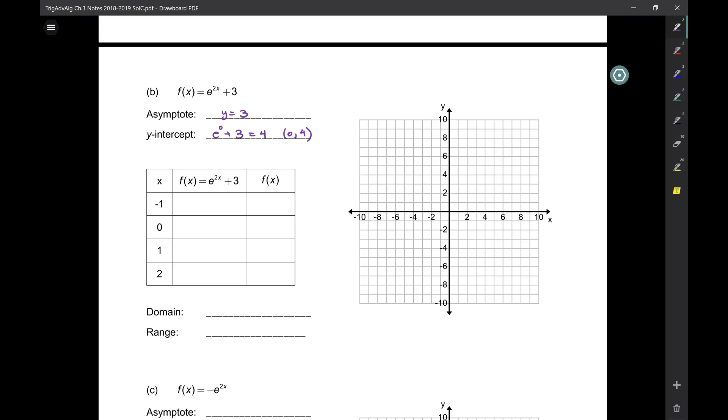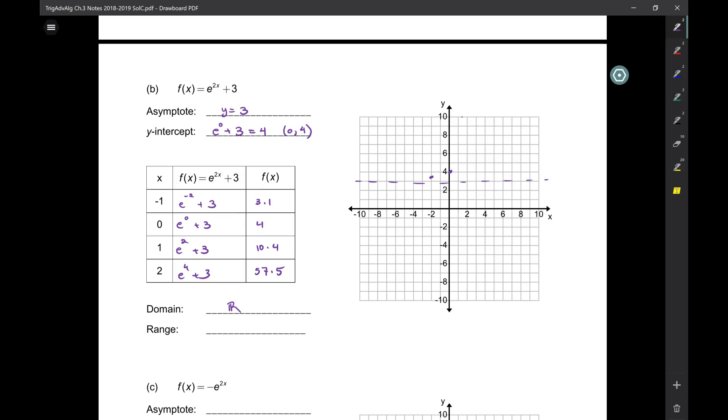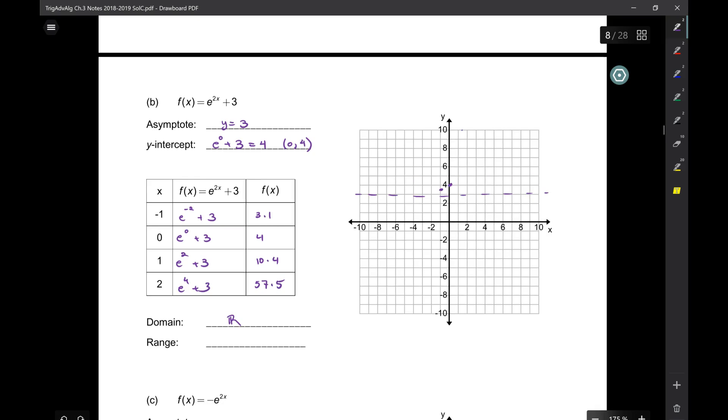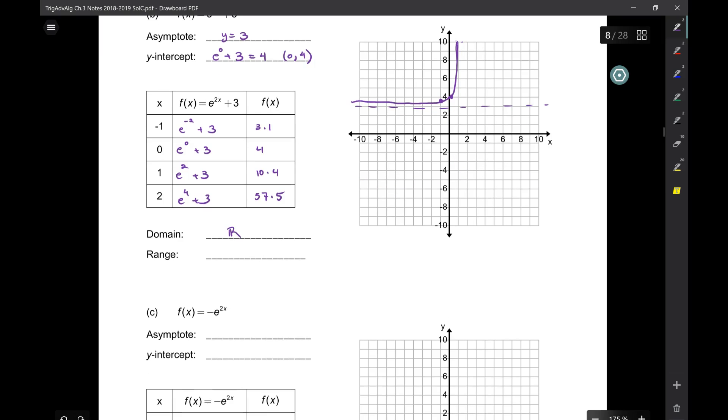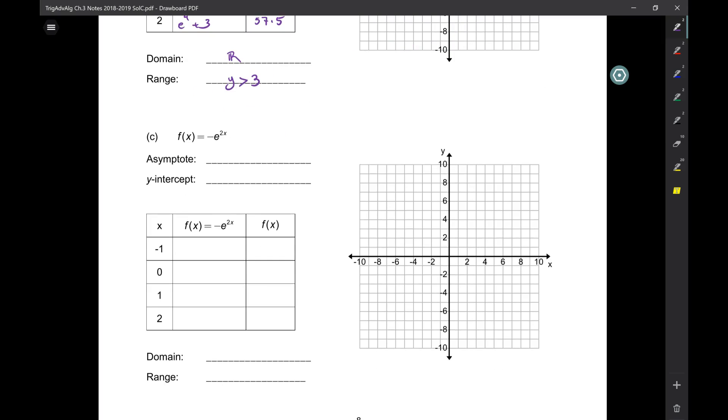Go ahead and plug these in. I'll stop this for a second. So here at x equals negative one is 3.1, and then it goes up like that. Here it's 3.1, and then y equals four right there. Now look at x equals one, the number is 10.4, so right there. Do you see how steep it really has to be? Do your best, make sure these points are accurate.